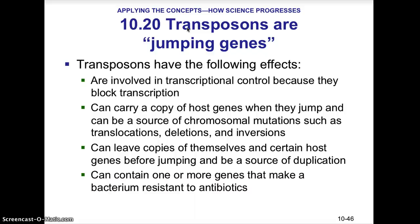Transposons are jumping genes. This idea came from Barbara McClintock. Transposons have the following effects: they are involved in transcriptional control because they block transcription; they can carry a copy of host genes when they jump; and they can be a source of chromosomal mutation, such as translocations, deletions, and inversions. Going back to the very beginning of this unit, we discussed these types of deletions, inversions, and translocations in chromosomal mutations — this is where they come into play. They can also leave copies of themselves in certain host genes before jumping, being a source of duplication, and they can contain one or more genes that make a bacterium resistant to antibiotics.